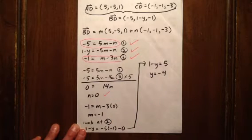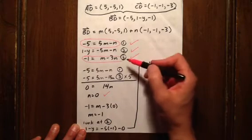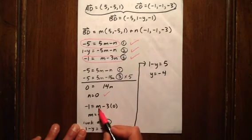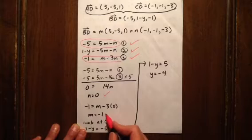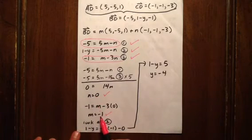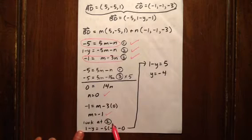What we can then do is determine what m equals by plugging it into equation 3. Negative 1 is going to be m minus 3 times 0. So m is going to equal -1. So we know that n is 0 and m is -1. Is that enough for us to solve for y? It sure is.